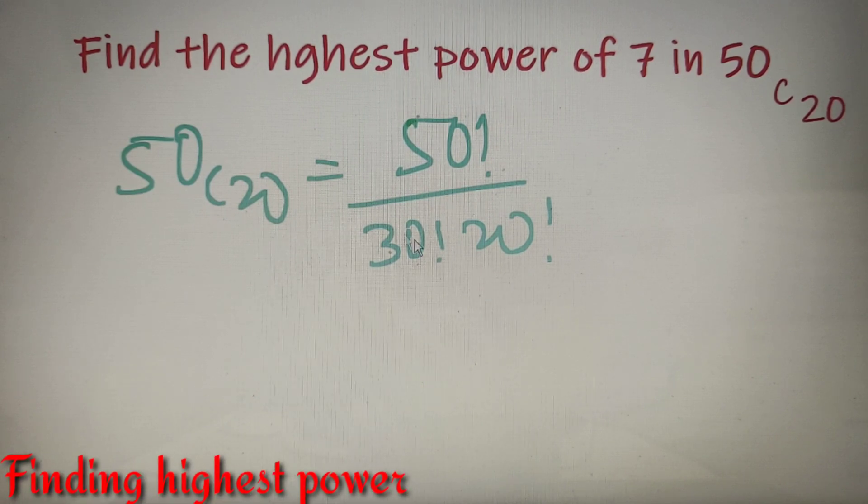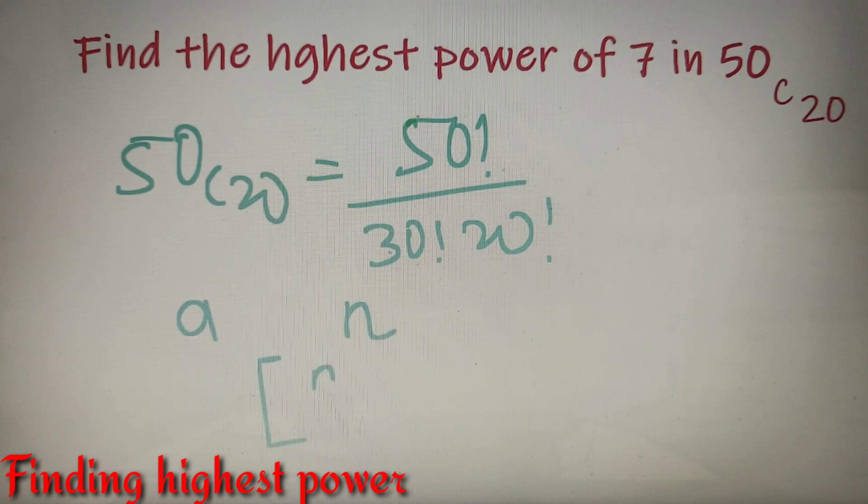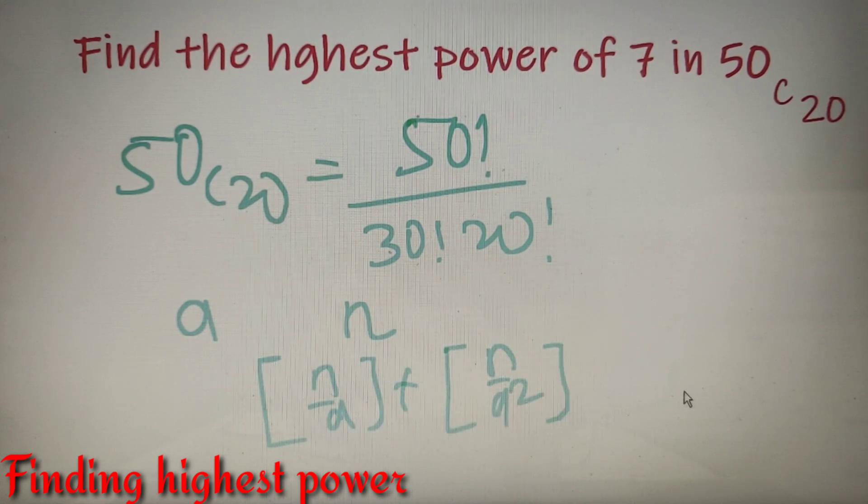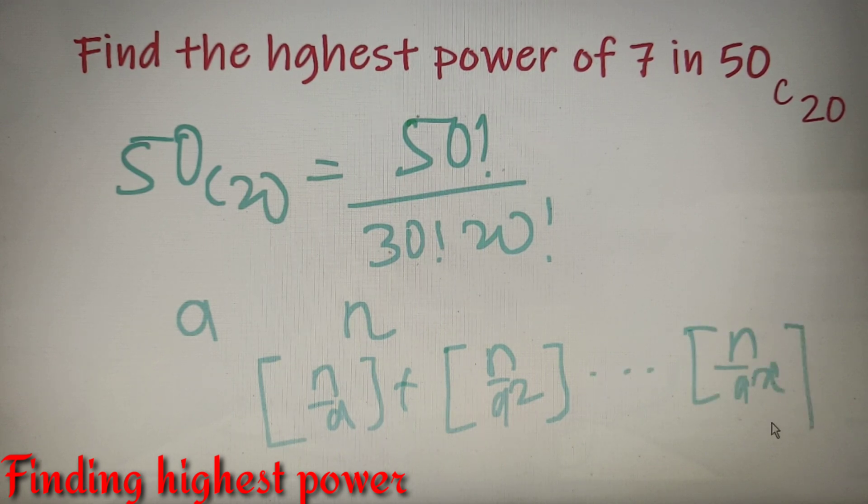To find out the highest power of a number in any factorial is very simple. Suppose we have to find out the highest power of A in any factorial N. We just have to calculate the sum of the greatest integer functions of N by A plus N by A squared, and we will move up to the value of N divided by A to the power X, where A to the power X is greater than N.